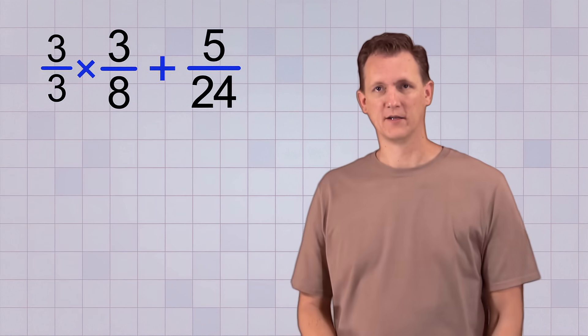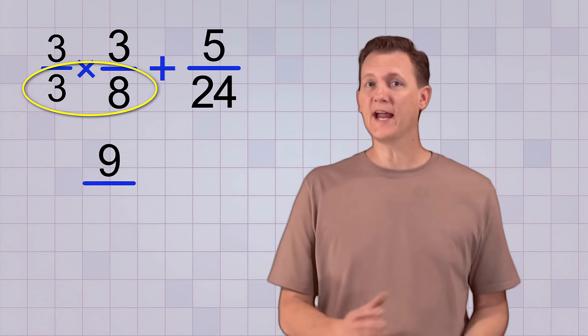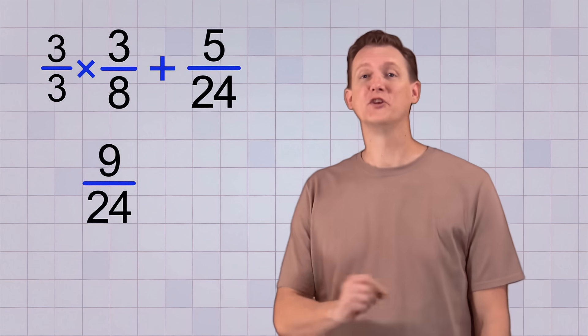Now we multiply. On top, 3 times 3 gives us 9, and on the bottom, 8 times 3 gives us 24, just like we wanted.